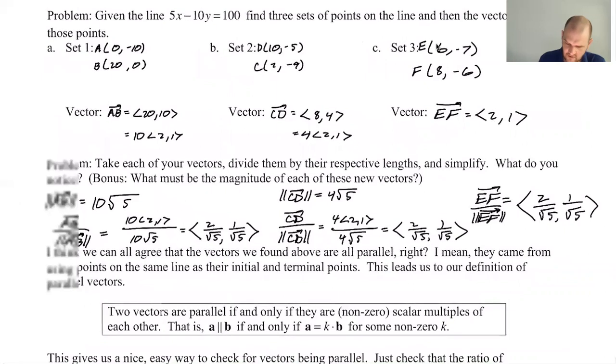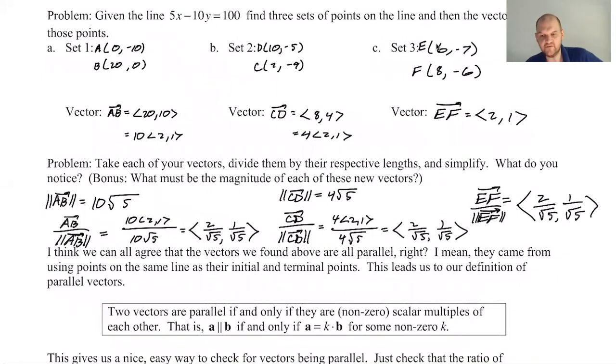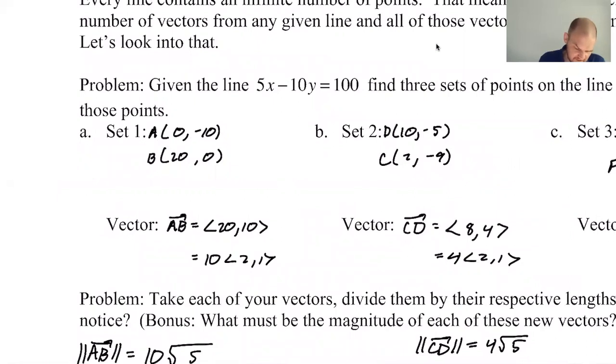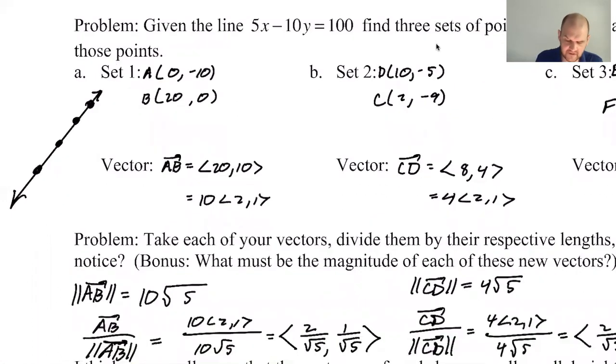In all cases, all of them reduced down to 2 over root 5, 1 over root 5. All of the vectors I'm telling you are parallel. How could they not be? In theory, I drew a line, and then I just picked a bunch of points from it. Every vector you get from there is either going to be parallel to every other vector, or it's going to be parallel but in the opposite direction.